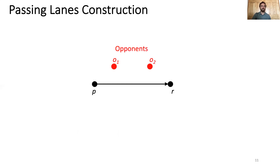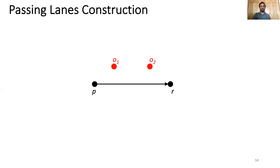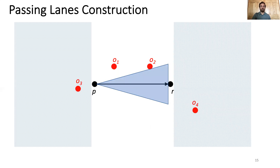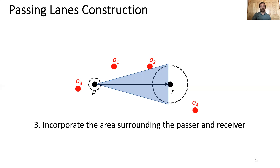Now, suppose we have opponents trying to intercept this pass and cause a turnover, or a change in possession. If two opponents are equidistant from the direct pass, the timing of the pass means that the second opponent actually has more opportunity to intercept it. So our second requirement is that the passing lane should be asymmetric with respect to the passing direction. One might then consider a triangle, since the first opponent would have to be closer to the actual pass to have the same threat level as the second opponent. However, this doesn't consider opponents behind P or R who also impact the ability for this pass to be made.